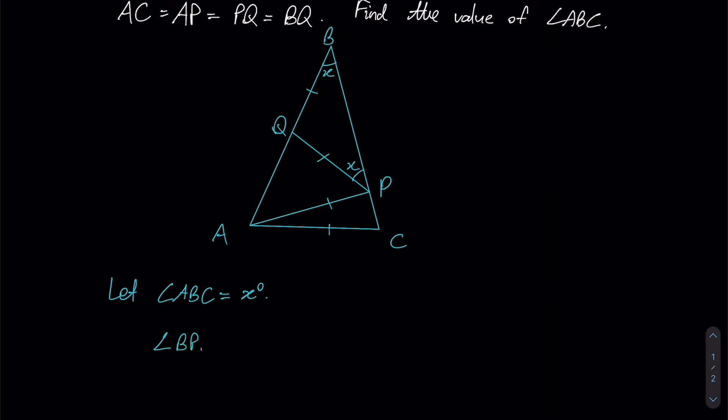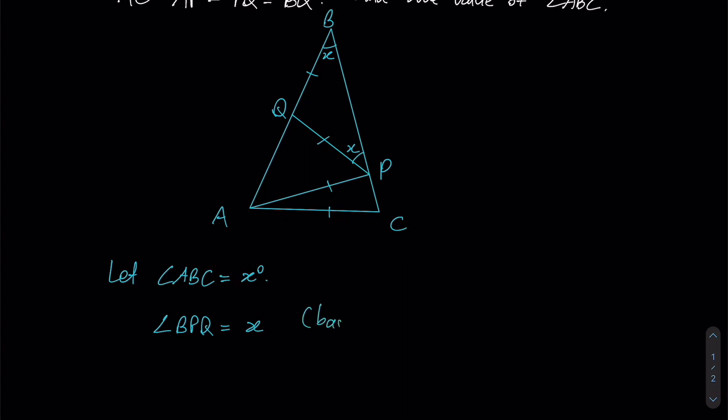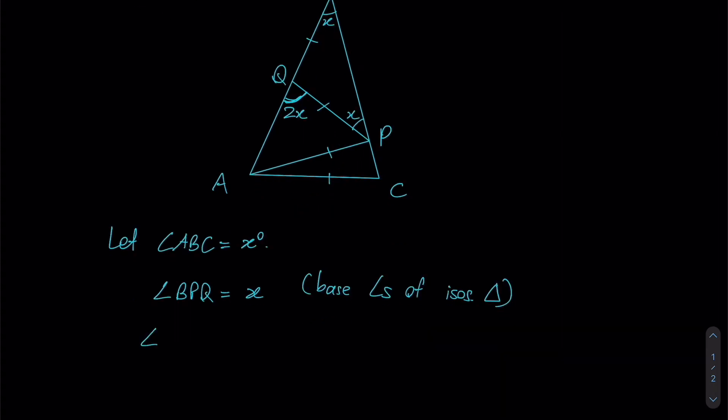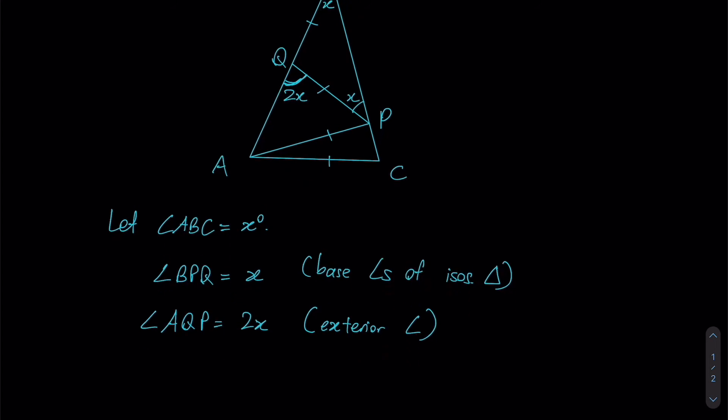So let's write that down: angle BPQ equals x as well due to base angles of isosceles triangle. I will be only writing this rule once because this rule will be pretty much all we need to solve this question. Now, if these two angles are x, you can actually use the exterior angle rule to derive this angle over here, which will be the sum of these two angles, which will therefore be 2x. So angle AQP will actually be 2x, and this is due to exterior angle. Again, I'll be writing this just once.